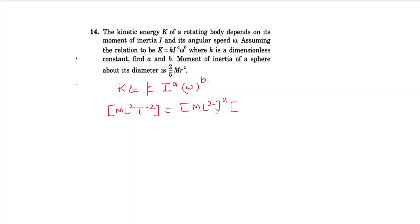Omega has dimension T⁻¹. Now we equate the LHS and RHS equations. First we equate for mass dimension.